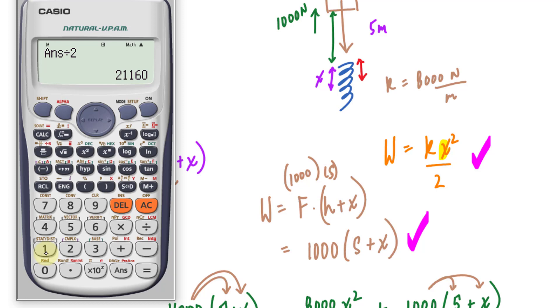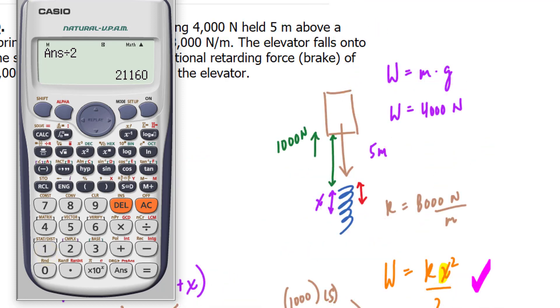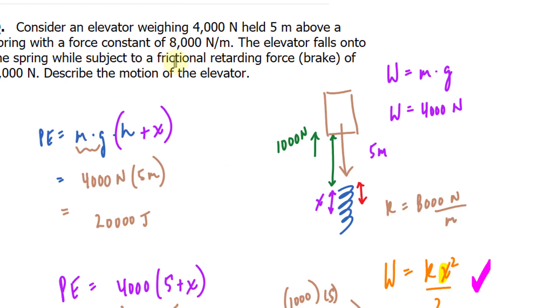So if we were to continue this question, we would use 21,160 as the amount of kinetic energy that will push the elevator back up. But remember, as it's pushing the elevator back up, you still have that frictional retarding force that you need to consider. So after it bounces back up,